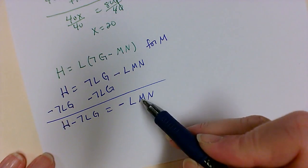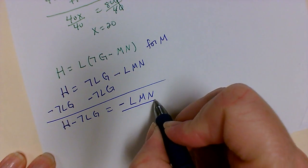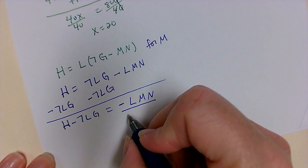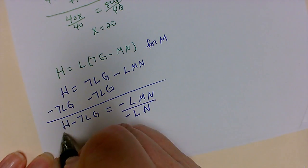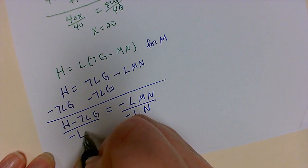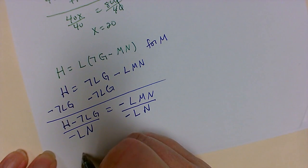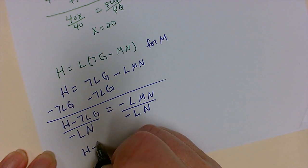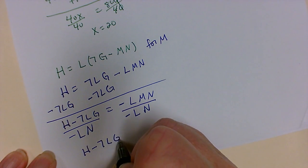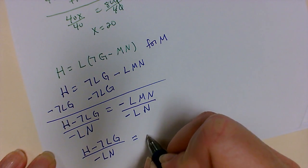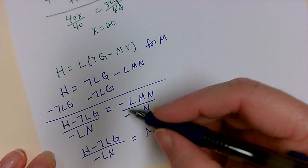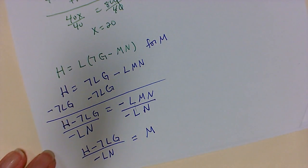A lot of problems lose points because we've dropped negative signs. So now I still want to solve for m. So I'm going to divide by anything that's not m. So divide by the negative, the l, and the n. What we do to one side, we do to the other. So that will leave us with h minus 7lg divided by negative ln is equal to my m. Because each of these terms will cancel out.